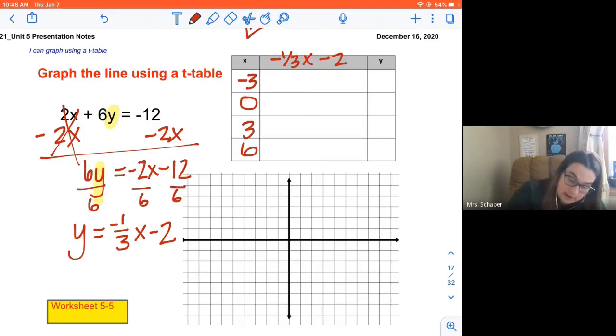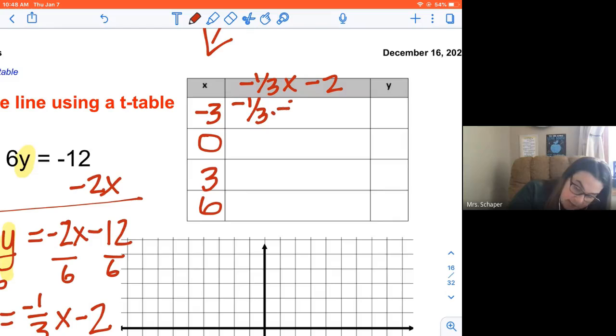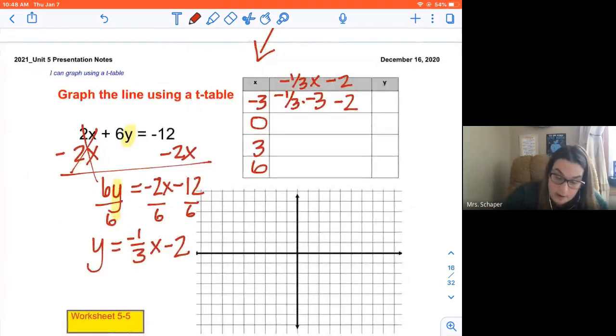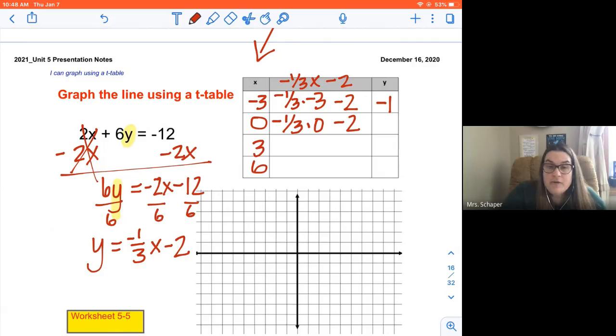So what we have is -1/3 times -3 minus 2. So I'm taking my x value, I'm substituting it in for x to solve for y. -1/3 times -3 is 1 minus 2 is -1. Looking at the next one, -1/3 times 0 minus 2, so -1/3 times 0 is 0 minus 2 is -2. -1/3 times 3 minus 2, -1/3 times 3 is -1 minus 2 is -3. And -1/3 times 6 minus 2 is -4.